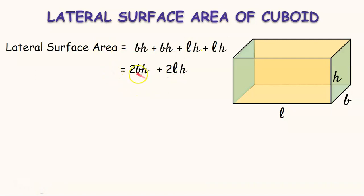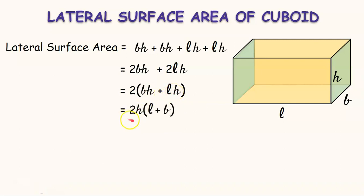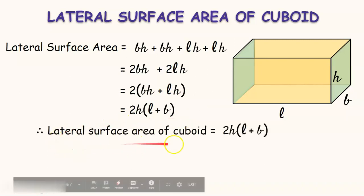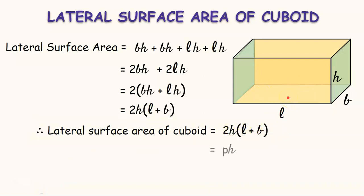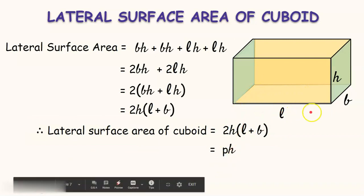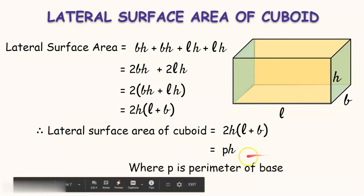Taking 2 as common in both terms, we get 2 into (BH + LH). Further, we can also take H as common in both and write it as 2H into (L + B). Therefore, the lateral surface area of the cuboid is 2H(L + B). In this formula, 2 into (L + B) can be replaced with P, where P is the perimeter of the base. So, the lateral surface area of the cuboid can also be written as P×H.